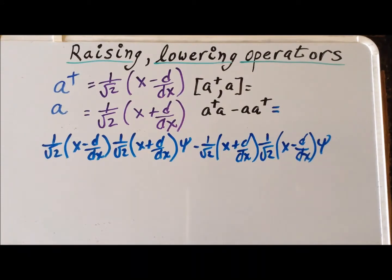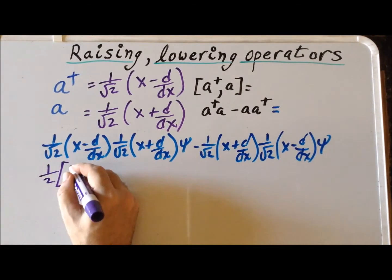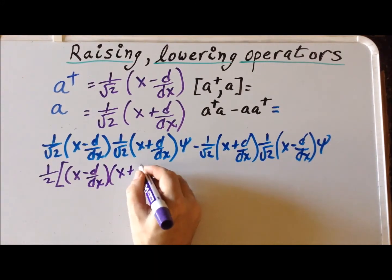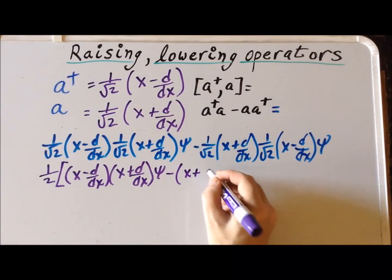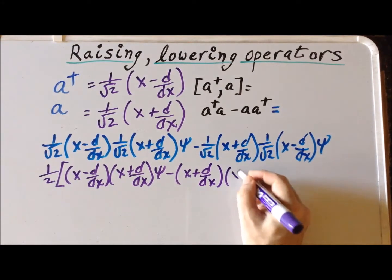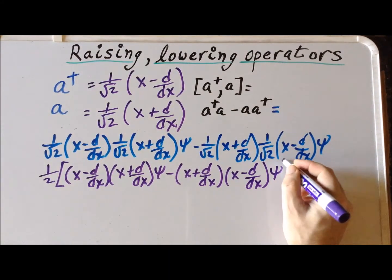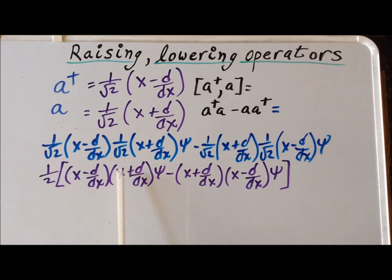Next, we can factor out 1 over the square root of 2 times 1 over the square root of 2, so that's going to be one half. That leaves (x minus d/dx)(x plus d/dx) acting on ψ, minus (x plus d/dx)(x minus d/dx) acting on ψ. By convention, operators act on functions from the left, so the operator immediately to the left of the function acts on it first.